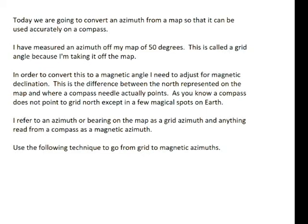So let's say that I've measured an azimuth off my map of 50 degrees. This is called a grid angle because I'm taking it off the map. In order to convert this to a magnetic angle, I need to adjust for magnetic declination. This is the difference between the north represented on the map and where a compass needle actually points.